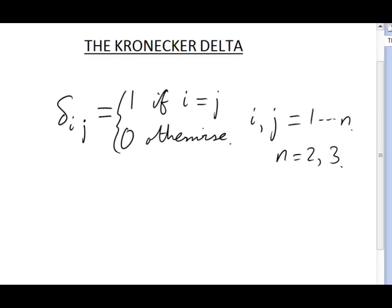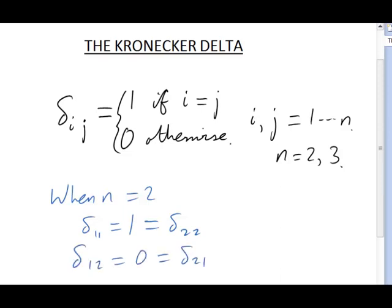Let's analyze this when n is 2. It means that delta 1,1 is equal to 1. So, also, is delta 2,2. That's because the i and j are the same in these two deltas. 1 and 1, or 2 and 2. On the other hand, delta 1,2 and delta 2,1 must be 0. That's everything for the case when n equals 2.